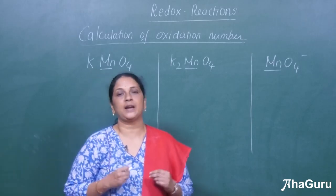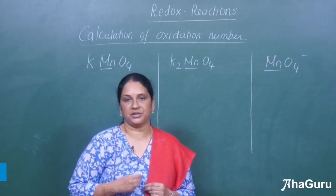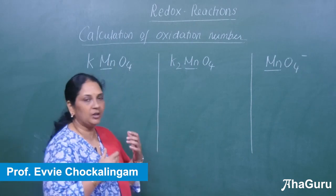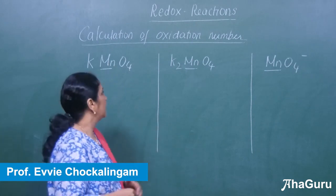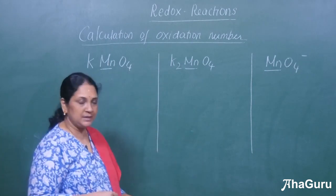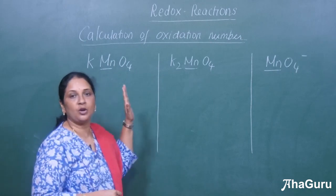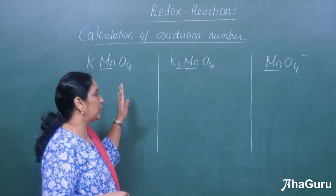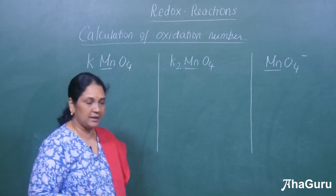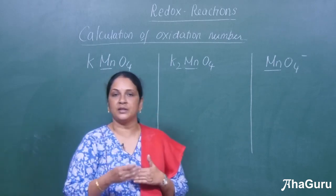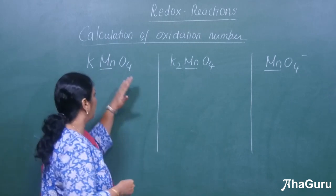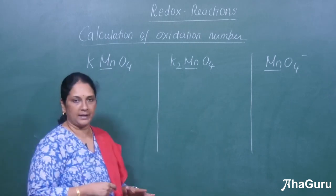Let us see how to calculate the oxidation number for a specific element in a compound. I have given a few examples where we will have to calculate the oxidation number of manganese — that is why I have underlined all of them. Let us apply all the rules we have studied and calculate the oxidation number of manganese.